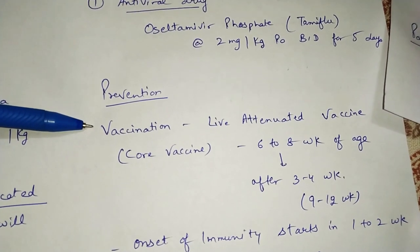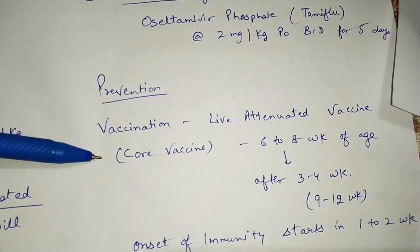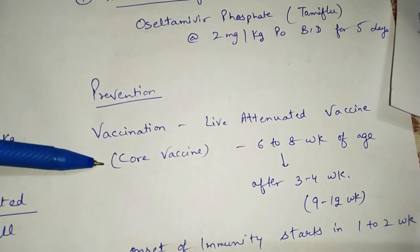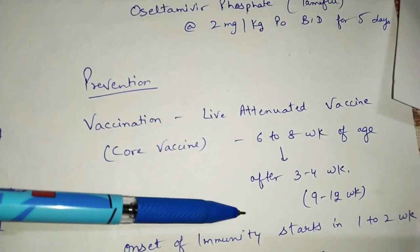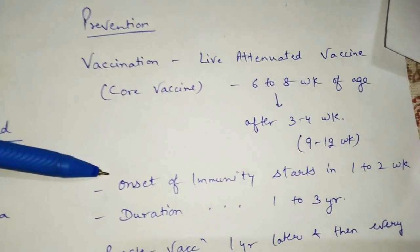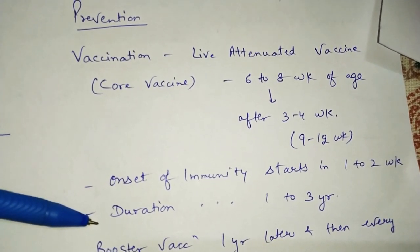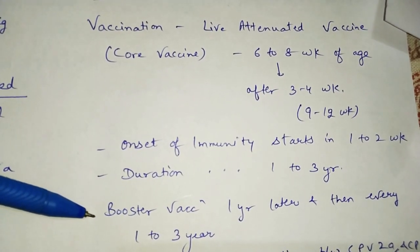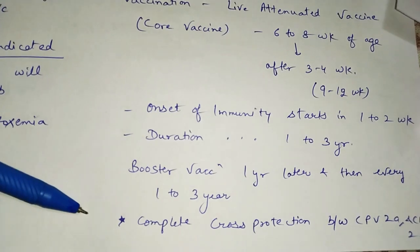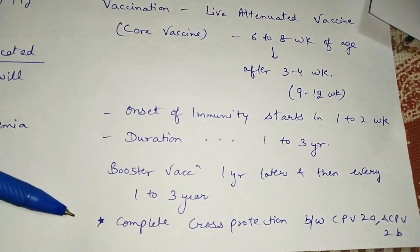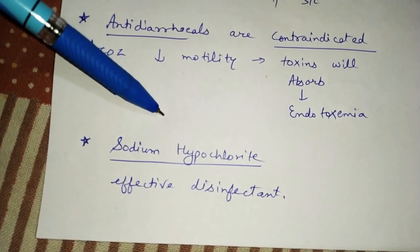For prevention, vaccination with a live attenuated core vaccine such as DHPPiL — distemper, hepatitis, parvovirus, parainfluenza, and leptospira — is recommended. It can be given at six to eight weeks of age, with a second dose after three to four weeks. Onset of immunity starts one to two weeks after vaccination, with duration of one to three years. Booster vaccination should be given one year later and then every one to three years. There is complete cross-protection between CPV-2a and CPV-2b. Sodium hypochlorite is an effective disinfectant against parvovirus.